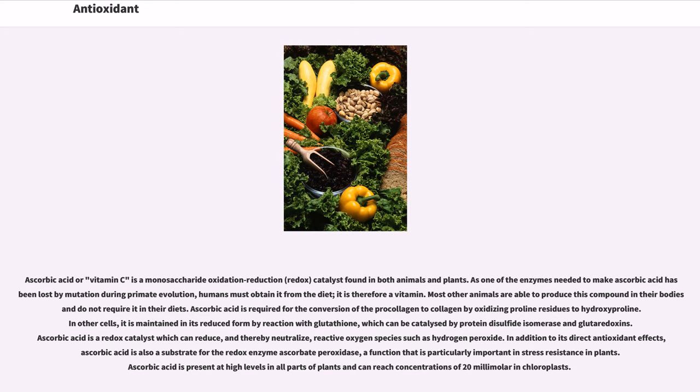In other cells, it is maintained in its reduced form by reaction with glutathione, which can be catalyzed by protein disulfide isomerase and glutaredoxins. Ascorbic acid is a redox catalyst which can reduce, and thereby neutralize, reactive oxygen species such as hydrogen peroxide. In addition to its direct antioxidant effects, ascorbic acid is also a substrate for the redox enzyme ascorbate peroxidase, a function that is particularly important in stress resistance in plants. Ascorbic acid is present at high levels in all parts of plants and can reach concentrations of 20 millimolar in chloroplasts.